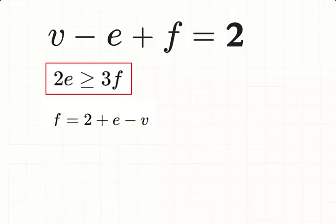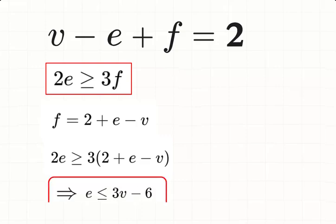So we get 2 times E is greater than or equal to 3 times F. Now solve Euler's formula for F. F equals 2 plus E minus V. Substitute that into the inequality. 2E is greater than or equal to 3 times 2 plus E minus V. E is less than or equal to 3V minus 6. That's our key inequality for planarity.